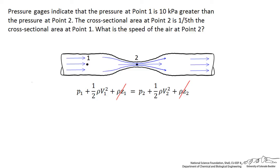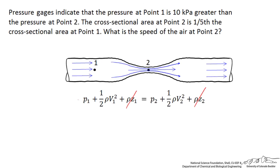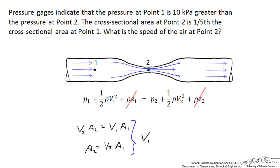We need to figure out how much the velocity increases between points one and two. Because the fluid is incompressible, the volumetric flow rate at point one equals the volumetric flow rate at point two. So we can write that V₂ times A₂ equals V₁ times A₁. Since A₂ equals one-fifth of A₁, we can deduce that V₁ is one-fifth of V₂ — in other words, the speed at point two is five times greater than the speed at point one.